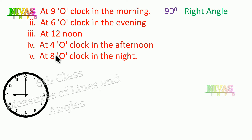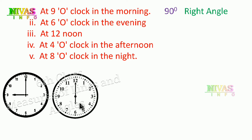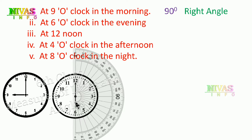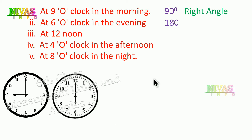Next, at 6 o'clock in the evening. Using the clock and a protractor to measure, the angle between the hands is 180 degrees, so this is a straight angle.